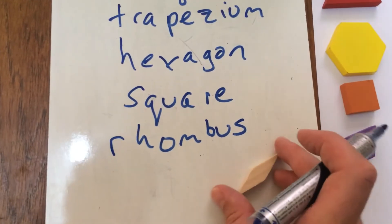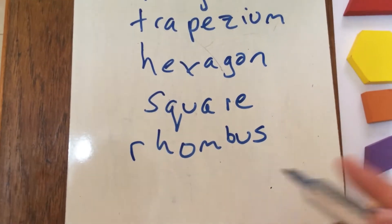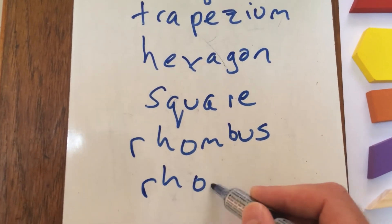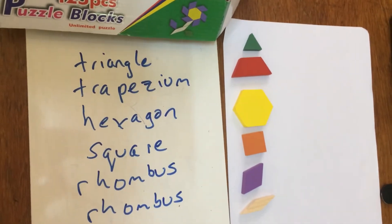And then another type of parallelogram, which is another type of rhombus—all the sides are equal. Okay, so those are the shapes we're going to work with.